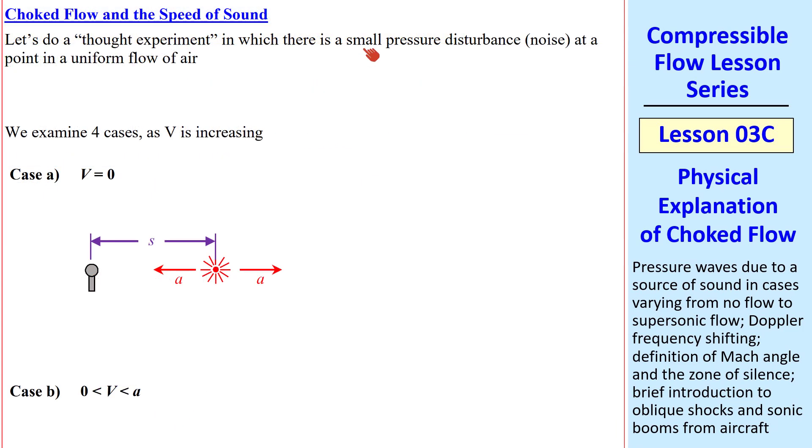Let's do a thought experiment where we have a small pressure disturbance, or noise, at some point in a uniform flow of air. Sound disturbances are pressure fluctuations, which we'll assume occur at a point, and then they spread out in all directions at the speed of sound. This would be the case with no flow. If the air is flowing at some speed V, but the source is fixed in space, these sound waves or pressure waves move at speed A relative to the local wind velocity. We'll examine four cases as V keeps increasing.